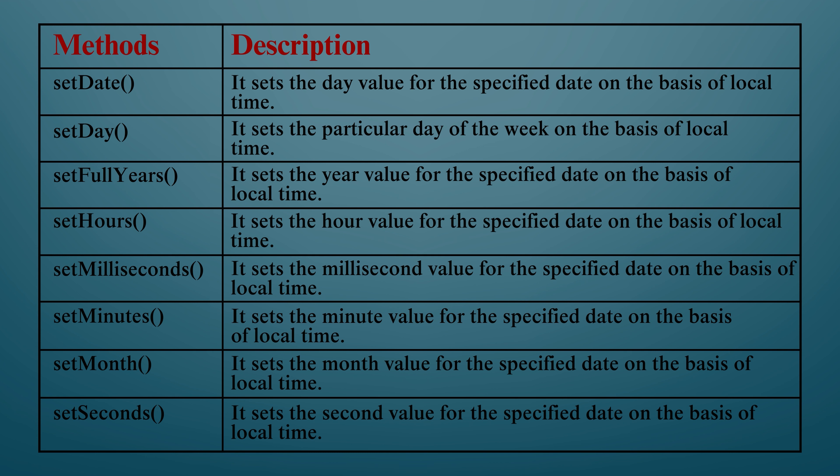setHours will set the hour value for the specified date based on the local time, which you pass as a parameter. setMilliseconds will set the millisecond value for the specified date based on local time. The next method is setMinutes, and you will set the minute value for the specified date.